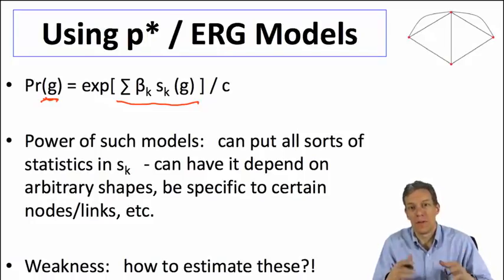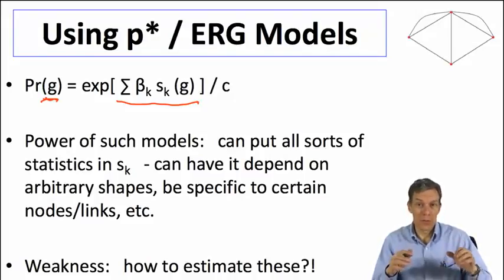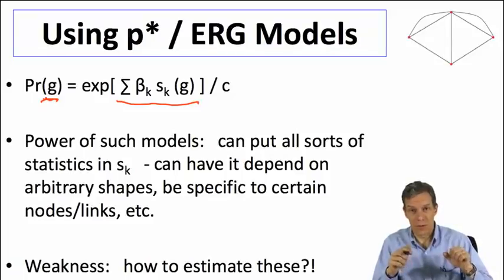This is a statistical model that will allow us to test for different features of networks and find out whether features are significantly present or not, in terms of did these really determine whether the network was formed. The power of such models is that this is a very general formulation and it allows us to capture many different things.